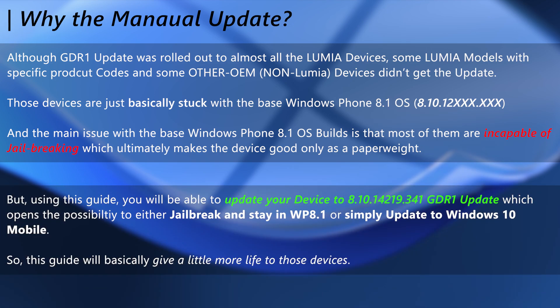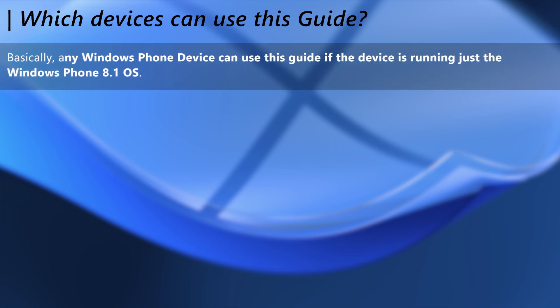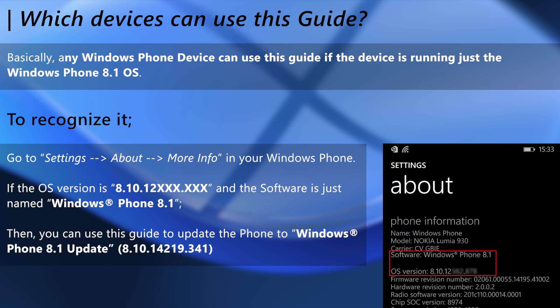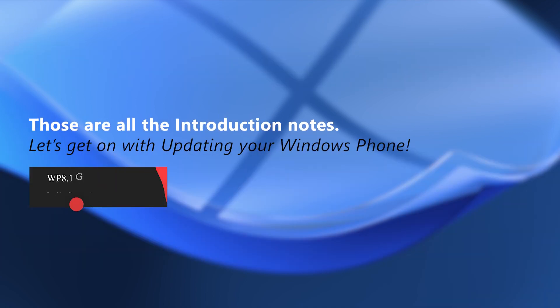The main drawback of that is the phone cannot be jailbroken in that state — that's why this video is created. It will successfully update all those devices to the GDR1 update. Any Windows Phone which has base Windows Phone 8.1 without the GDR1 update can use this guide to update their device fully offline. To know what you have on your phone, follow the instructions below — if the OS version starts with 12, then you are good to go. That's it for the introduction; let's get into updating your device.